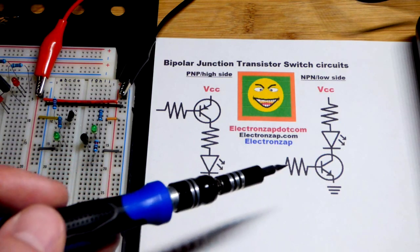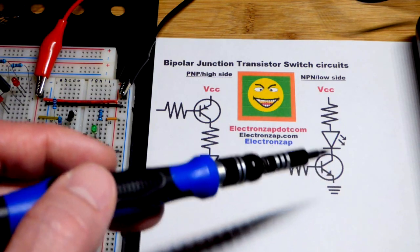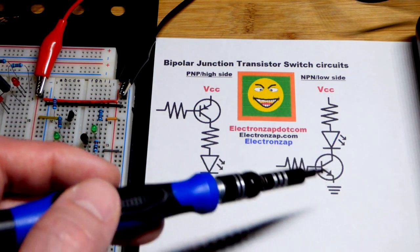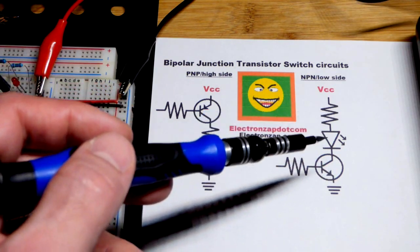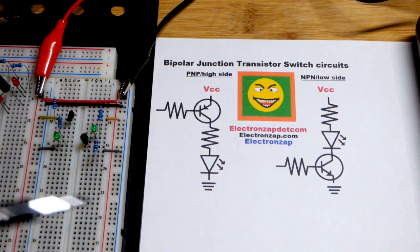From base to emitter, a small current there will let the transistor conduct pretty much fully. But in any case, it'll conduct a lot better than the resistor and LED, so the resistor and LED will set the current.